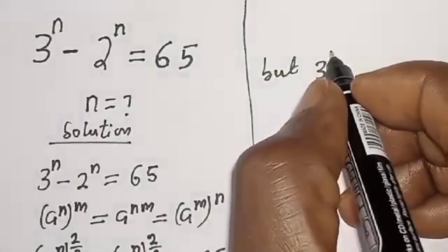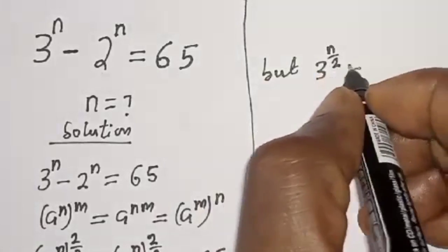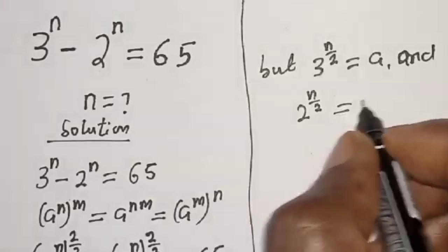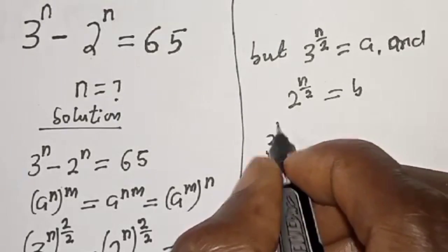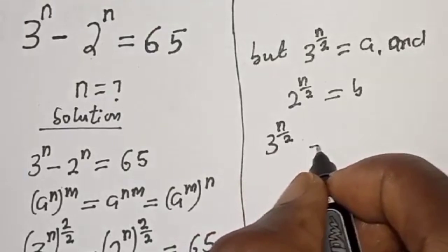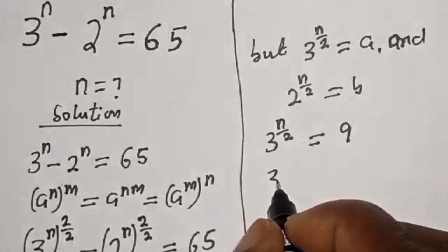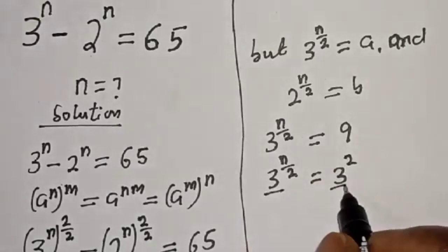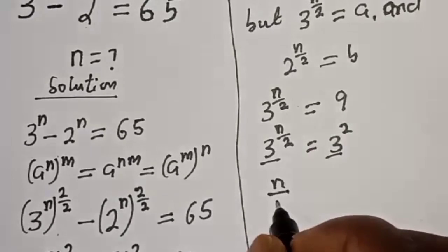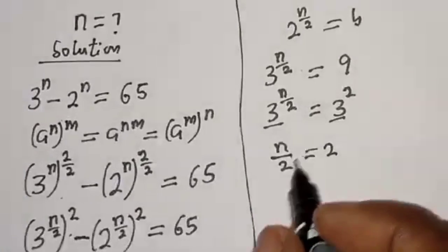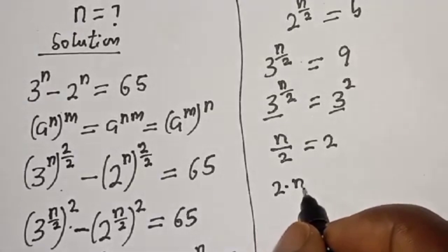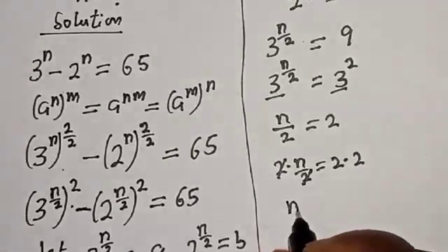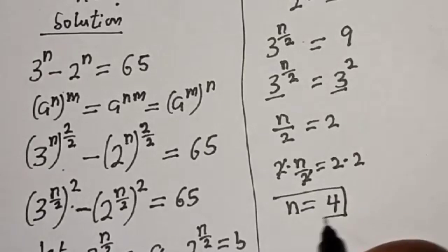Since 3 raised to power (n over 2) equals A, we have 3 raised to power (n over 2) equals 9, which is 3 squared. With the same base 3, we equate the exponents: n over 2 equals 2. Multiplying both sides by 2, n is equal to 4. That is the value of n.